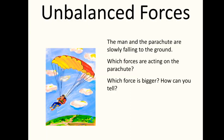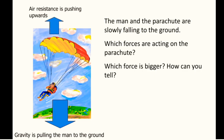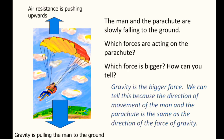The man and the parachute are slowly falling to the ground. Which forces are acting on the parachute? Which force is bigger? How can you tell? Gravity is pulling the man to the ground, while air resistance is pushing upwards. Gravity is the bigger force — we can tell this because the direction of movement of the man and the parachute is the same as the direction of the force of gravity.